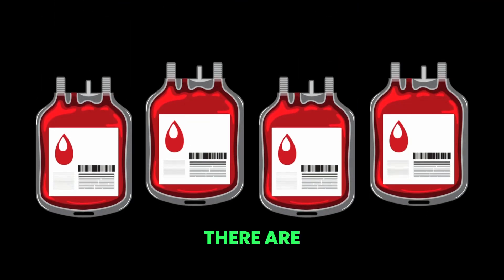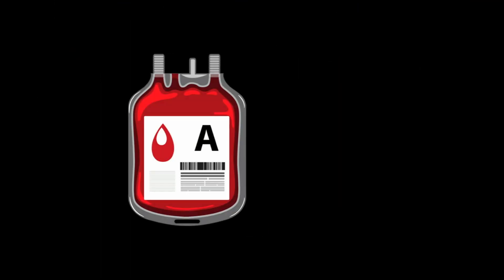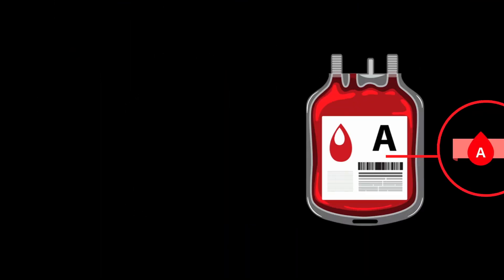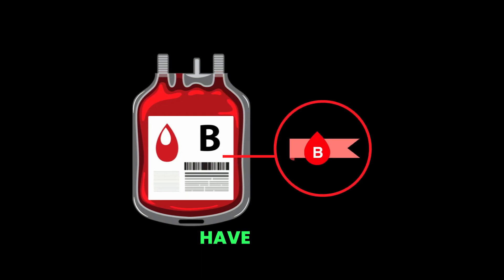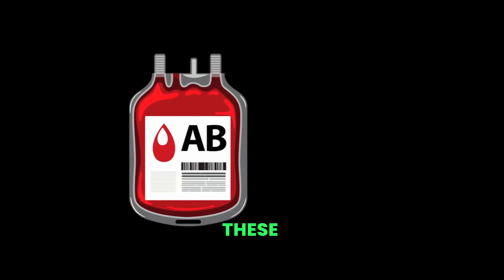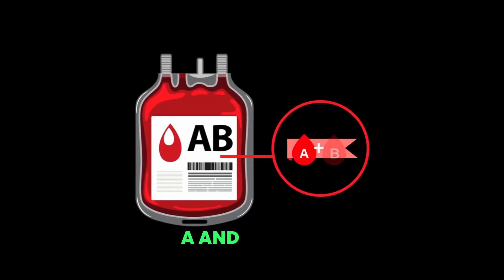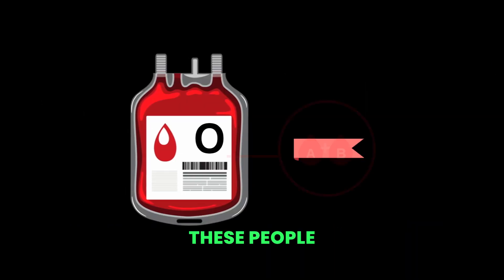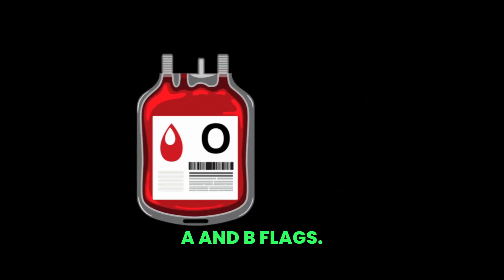There are four main types. Type A: red blood cells have only A flags. Type B: red blood cells have only B flags. Type AB: these lucky ones have both A and B flags. Type O: these people lack both A and B flags.